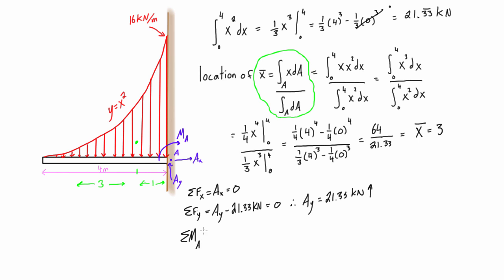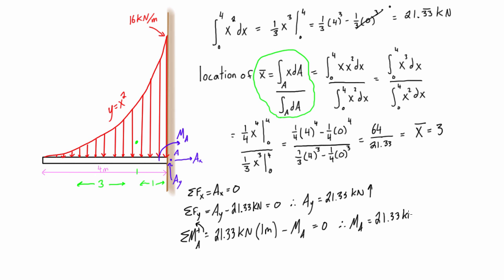For the sum of moments about point A, the moment caused by the distributed force equals the total force magnitude passing through the centroid: 21.33 kilonewtons times the distance to point A, which is 1 meter. That acts against Ma, and the sum equals zero. Bringing Ma to the other side, Ma equals 21.33 kilonewton-meters in the clockwise sense.